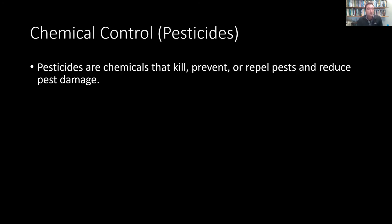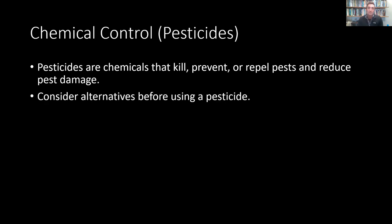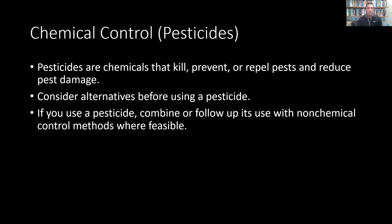Finally, chemical control — pesticides — are chemicals that kill, prevent, or repel pests and reduce pest damage. You should always consider alternatives before using a pesticide. If you do use a pesticide, it's good to combine or follow up its use with non-chemical control methods where feasible, so that you can use other methods from the pyramid and need less chemical. We will talk in future weeks about each of these elements in greater detail.